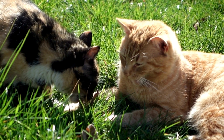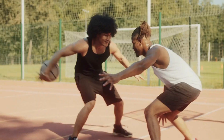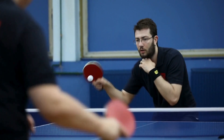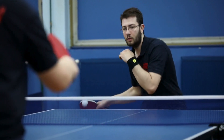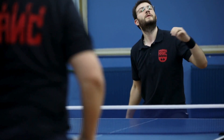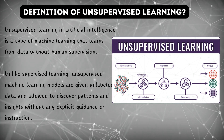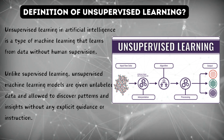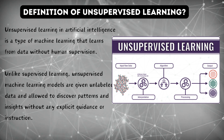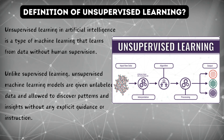We humans learn a lot of things by finding different patterns in the world. For example, by watching cats and dogs playing, or watching a basketball game, or watching a table tennis game, we learn by ourselves without anyone teaching us their patterns. This kind of learning, without anyone teaching us, is called unsupervised learning. Unsupervised learning in artificial intelligence is a type of machine learning that learns from data without human supervision. Unlike supervised learning, unsupervised machine learning models are given unlabeled data and allowed to discover patterns and insights without any explicit guidance or instruction.